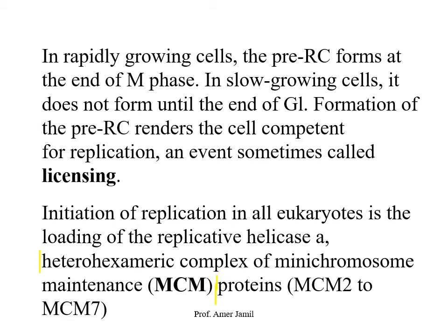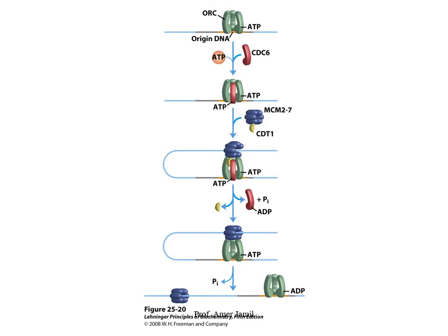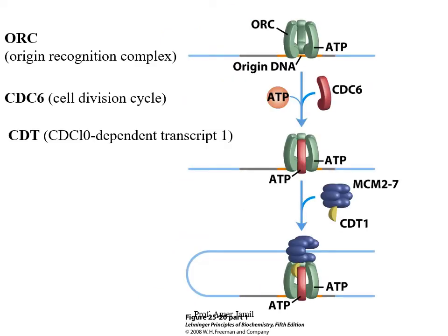The replicative helicase is a heterohexameric complex of mini-chromosome maintenance proteins, termed MCM2 through MCM7 — six proteins in total, analogous to the hexameric helicase in prokaryotes. The first component to bind at the origin is the Origin Recognition Complex (ORC), which utilizes ATP and binds at the origin of replication in a specific orientation and hierarchy.